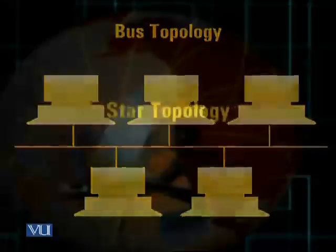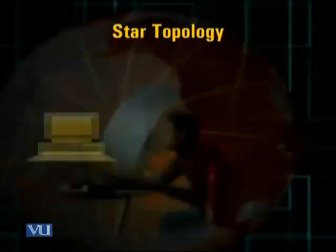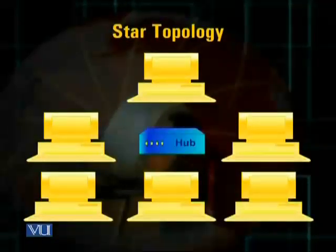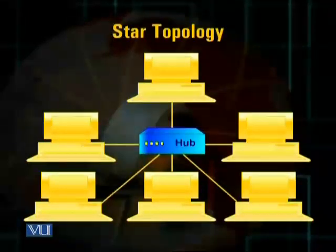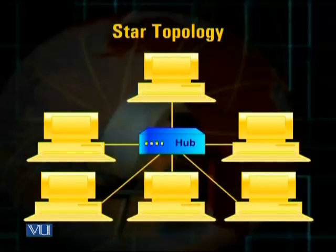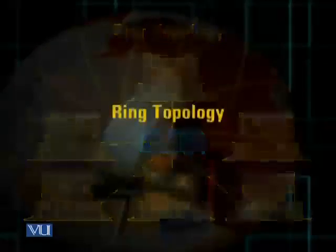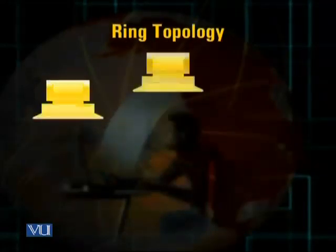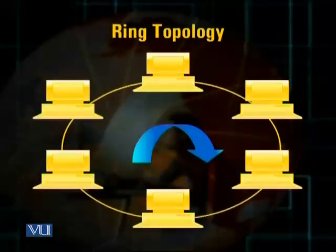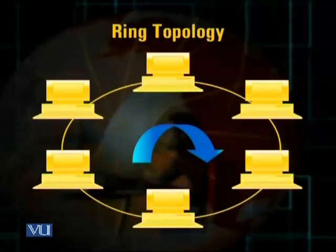Then comes the star topology. As you can see on the slide, in star topology there is a hub using which different computer machines are attached with each other. The hub plays the role of a central connection point, and computers are laid out in the formation of a star to constitute a LAN. The third topology is the ring topology, where computers are attached to each other in the formation of a ring — a physical circle.